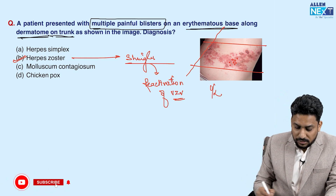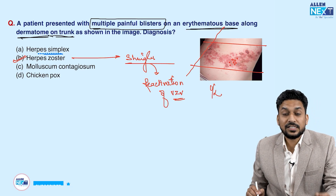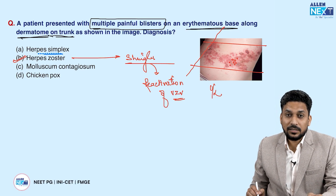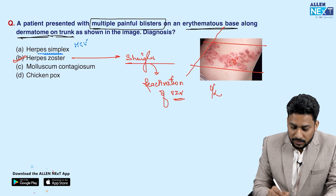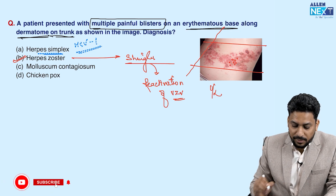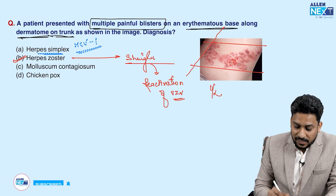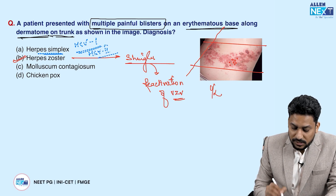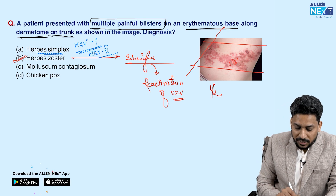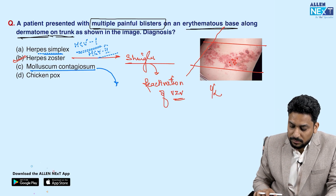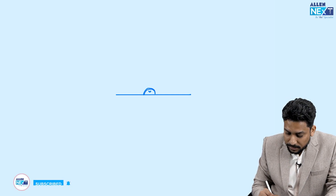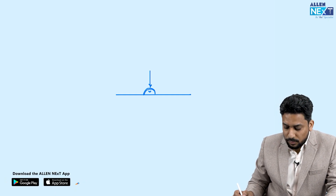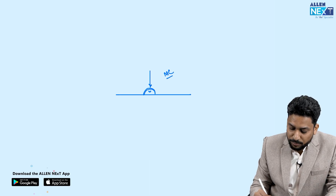Now why is the answer not herpes simplex? Because herpes simplex is not necessarily along a particular dermatome. It is caused by herpes simplex virus — HSV-1, which causes herpes labialis, and HSV-2, which causes herpes genitalis. Why is this not molluscum contagiosum? Because molluscum contagiosum presents with asymptomatic, not painful, dome-shaped pearly papules with central umbilication. This is very characteristic of molluscum contagiosum.